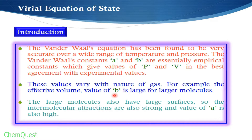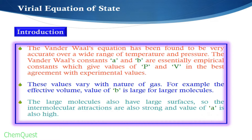For large molecules, the factor of polarizability comes in, which increases the excluded volume or effective volume. Large molecules also have large surfaces, so intermolecular attractions are also strong and the value of a is also high. The factor a accounts for attractive forces — for large molecules, not only is the value of b higher, but because large molecules have large surface areas, they provide more points for attractive forces, increasing the value of a as well.